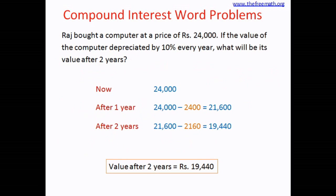That means we are now sure that if there is any reduction in price, decrease in population, or decrease in plantation — for any such problem, R should be negative.